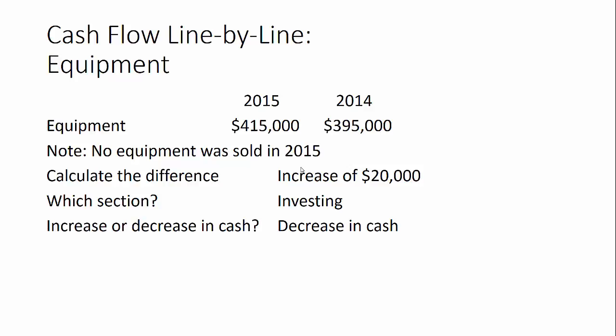So how do we put this in the cash flow statement? We know it goes in the investing section and it's a decrease in cash. Anytime you're working with the investing or financing section, you have to explain why something increased or decreased — you can't just say 'increase in equipment.' Since the equipment account increased, we know we purchased equipment, so under the investing section we say 'purchase of equipment' and subtract twenty thousand dollars.